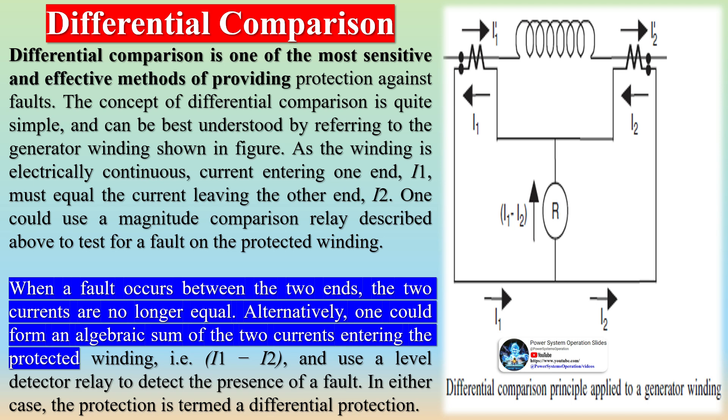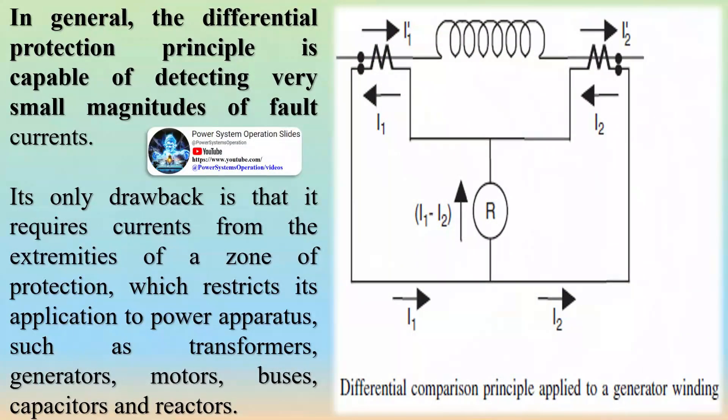Magnitude comparison. This operating principle is based upon the comparison of one or more operating quantities with each other. For example, a current balance relay may compare the current in one circuit with the current in another circuit, which should have equal or proportional magnitudes under normal operating conditions. The relay will operate when the current division in the two circuits varies by a given tolerance.